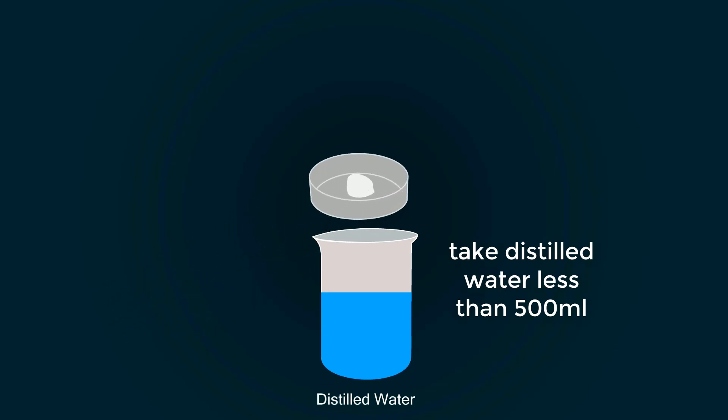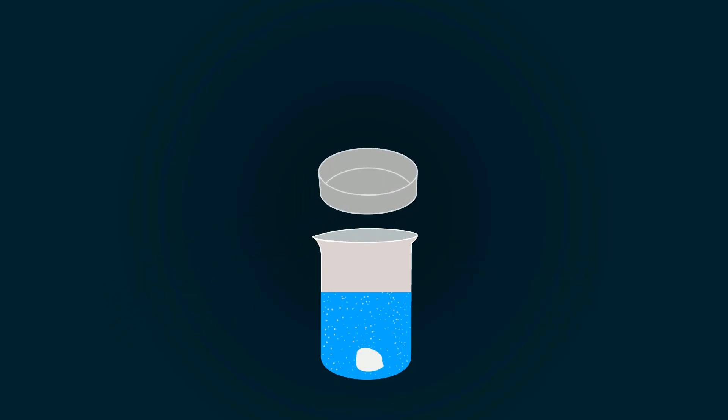Now take some water in a beaker and add that silver nitrate into it. We have to mix it so we can get homogeneous mixture.